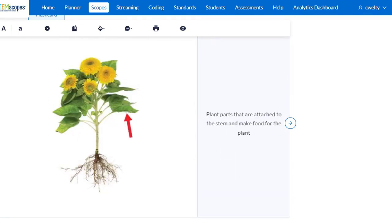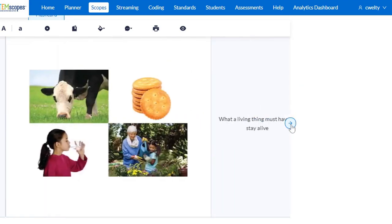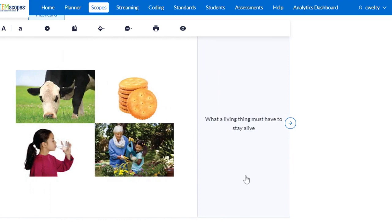The next one. Pay attention to the arrow again. The definition is plant parts that are attached to the stem and make food for the plant. Pause now for more time. This part of the plant is the leaves of the plant. It's important not only to remember what the plant part is called, but also its definition.